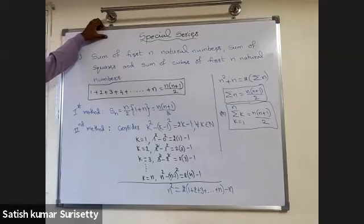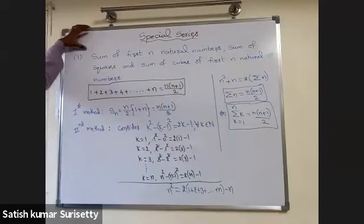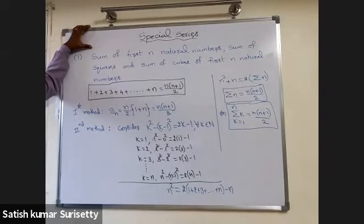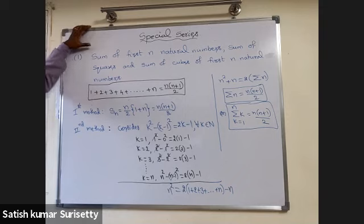In the special series, the first one is sum of first n natural numbers, followed by sum of squares and sum of cubes of first n natural numbers.